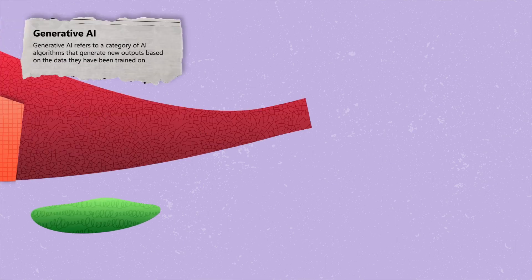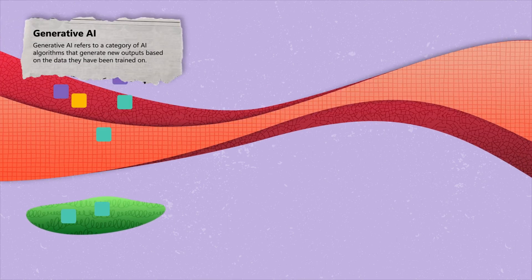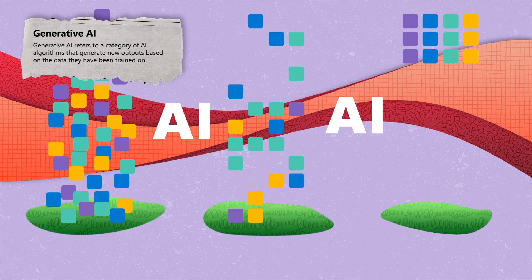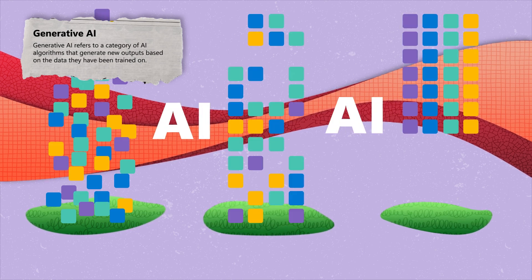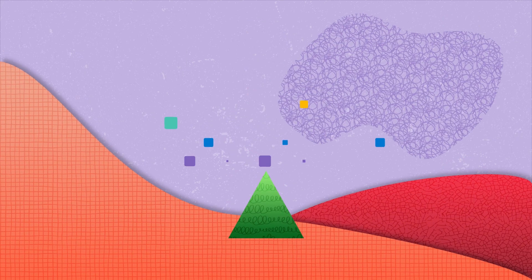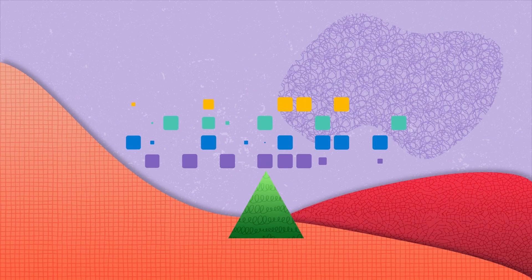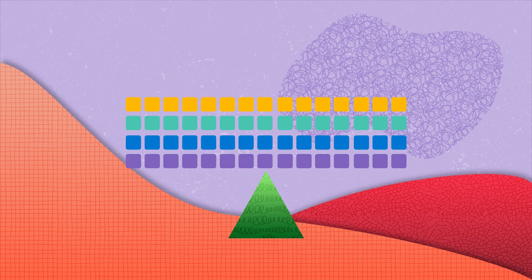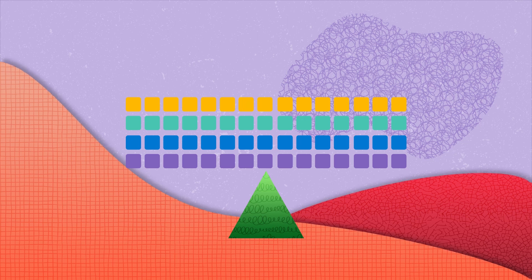Generative AI is a type of artificial intelligence trained on data to generate new content. By identifying patterns found in data, generative AI can produce entirely new and original creations, mirroring the intricate complexity of human imagination.